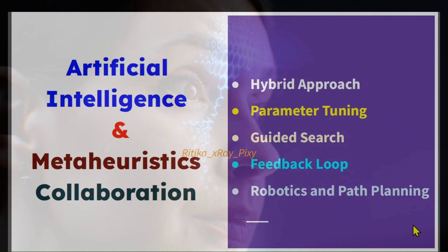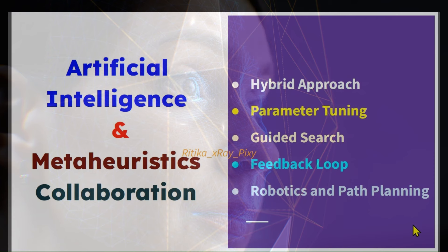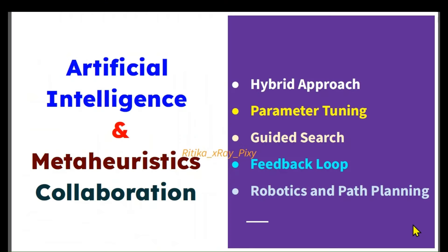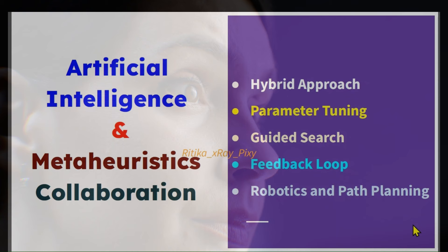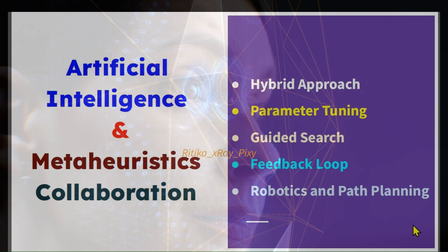Artificial intelligence and meta-heuristic algorithms can work effectively when combined to solve complex problems. We can create hybrid approaches by combining AI techniques with meta-heuristic algorithms. For example, combining machine learning with meta-heuristics can improve the search process. We can also use machine learning models to dynamically adjust the parameters for meta-heuristic algorithms, which is called parameter tuning.